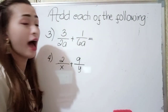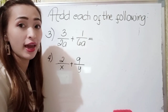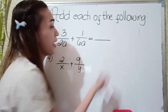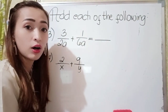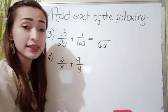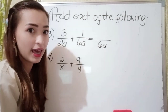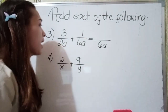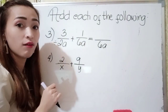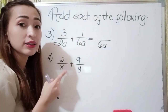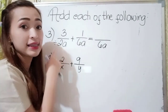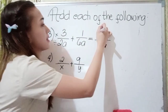For number three, we have three over 2A plus one over 6A. Let's first find the least common denominator. The LCD is 6A, because 2A can divide 6A and 6A can also divide 6A. So, 6A divided by 2A is three.